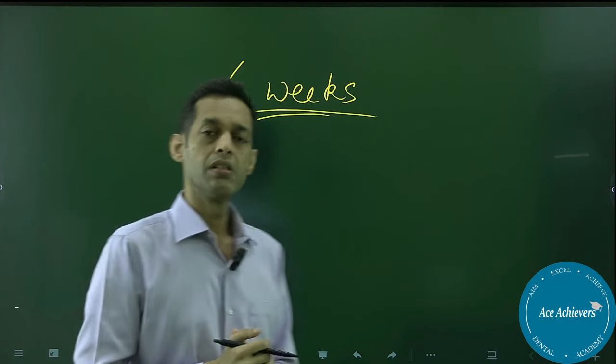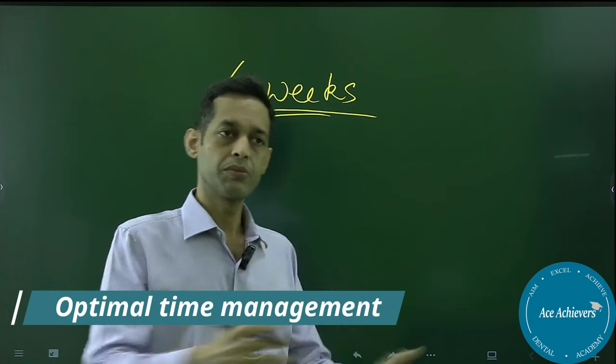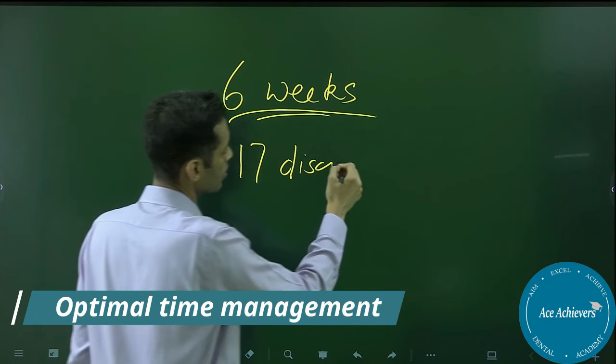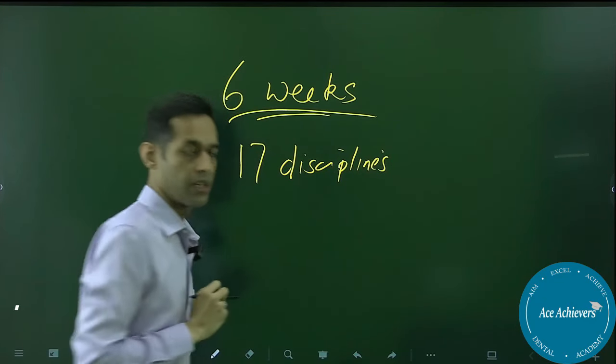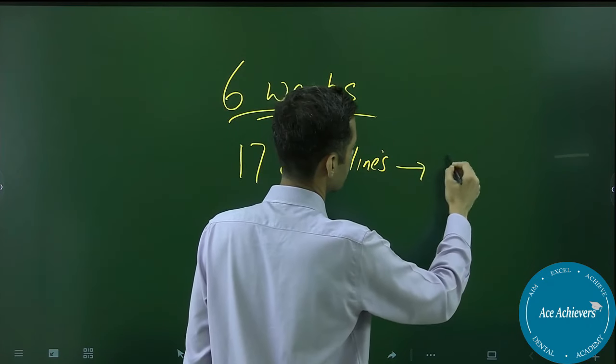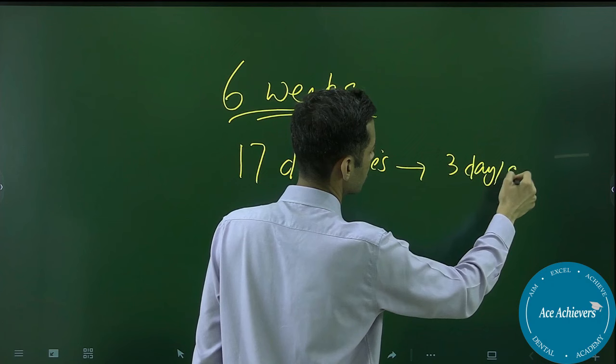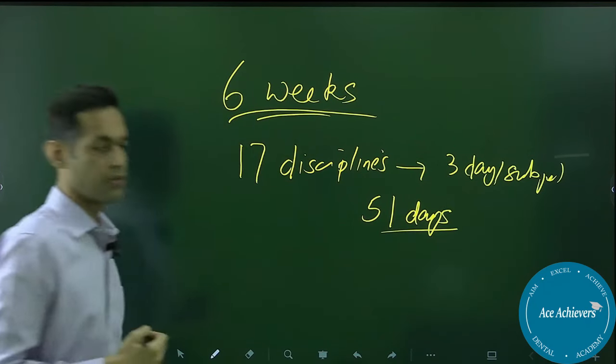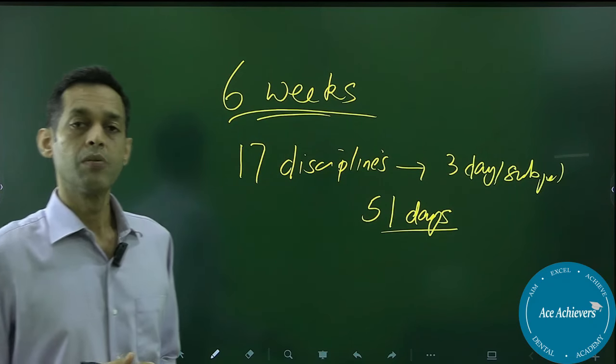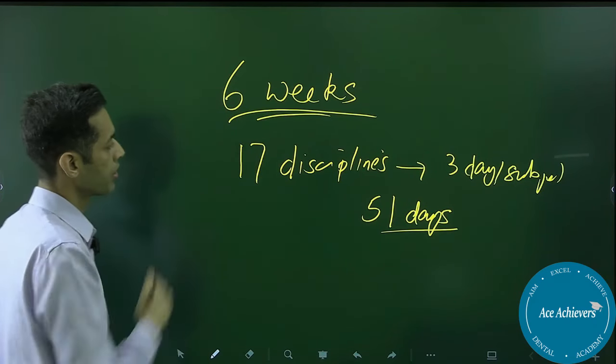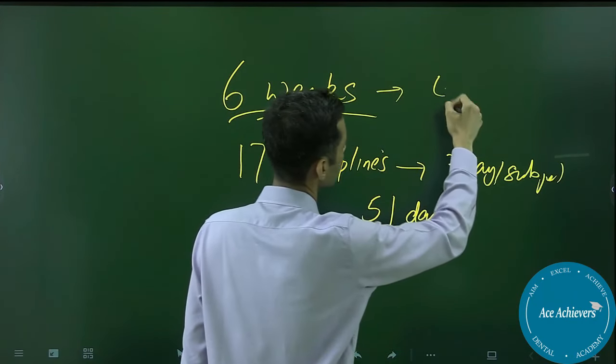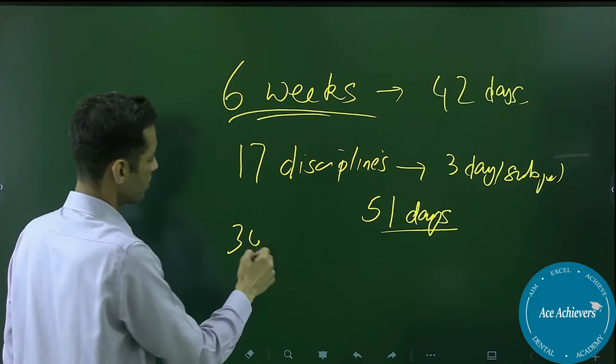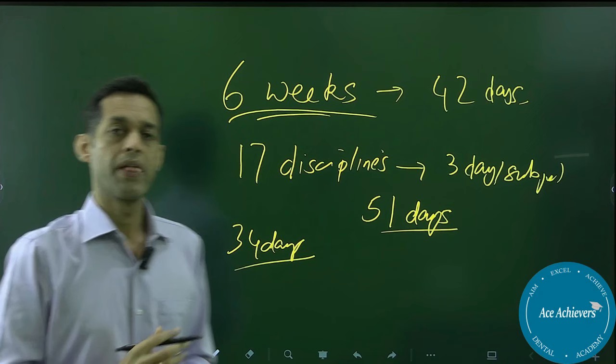You have around six weeks left to the exam. I see a lot of videos regarding how to prepare and the thing is you have to do the subjects and in two days you are completing the subject. You have around 17 disciplines which you have to cover for INICT. If you start giving even three days per subject, you will end up with 51 days of subject revision. You have around six weeks. Six weeks means 42 days, seven into six.